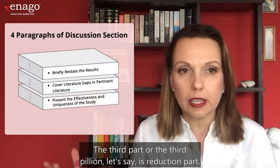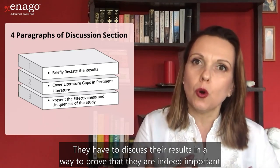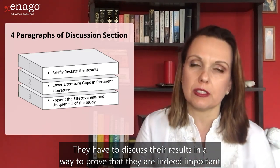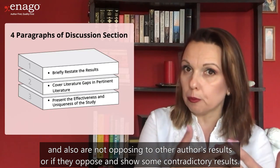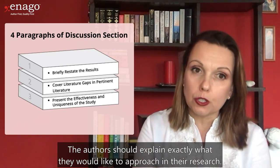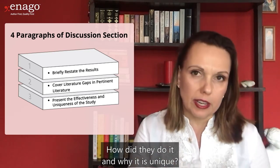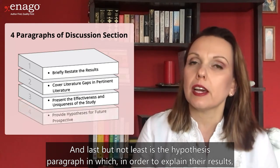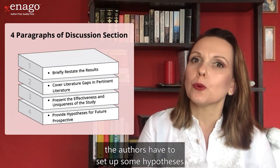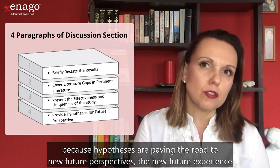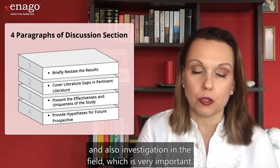The third pillar is the deduction part. Here, researchers have to show the effectiveness and uniqueness of their study. They must discuss their results in a way that proves they are important and not opposing other authors' results — or if they do show contradictory results, the authors should explain what they approached in their research, how they did it, and why it is unique. Last but not least is the hypothesis paragraph, in which authors set up hypotheses to explain their results, because hypotheses pave the road to new future perspectives and new investigations in the field.